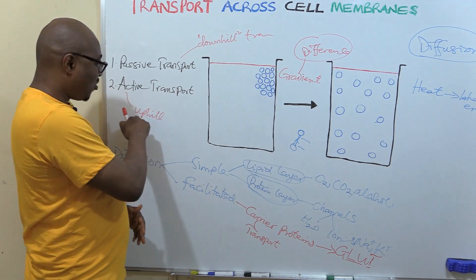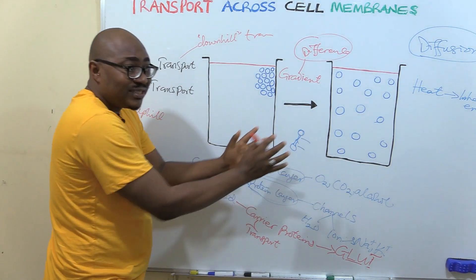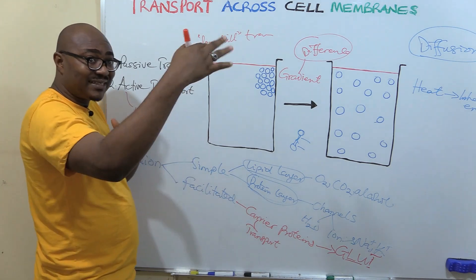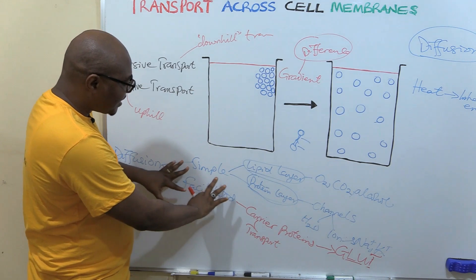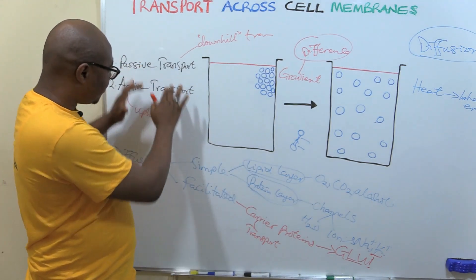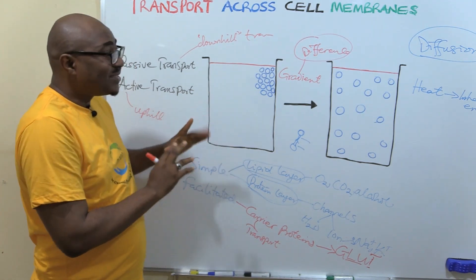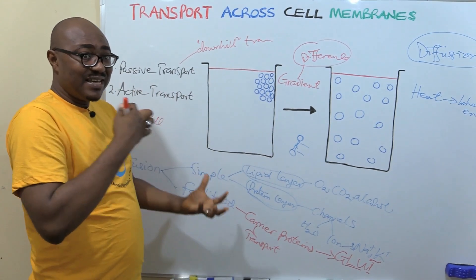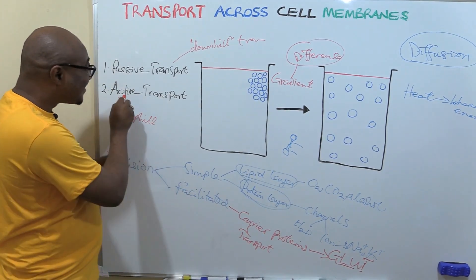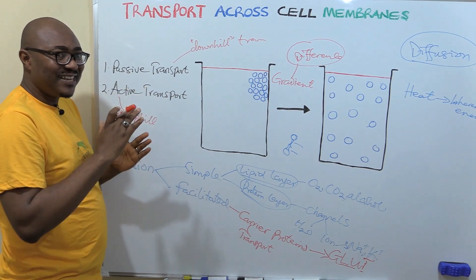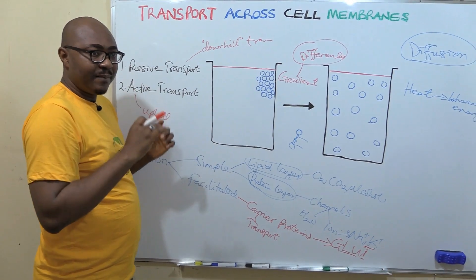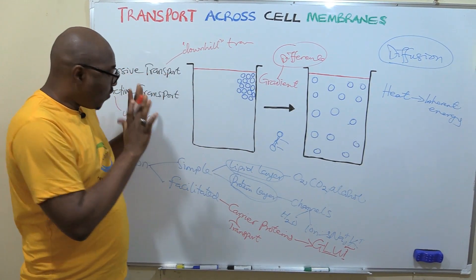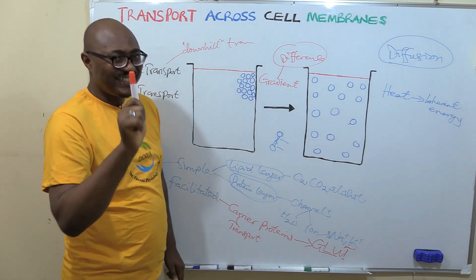Active transport moves substances from lower to higher concentration — to where the concentration is already higher — so it needs extra energy. That energy is ATP (adenosine triphosphate), which we'll cover in detail in other lectures. In part two, we'll deal with special types of passive transport. Don't miss that lecture — see you in the next video.